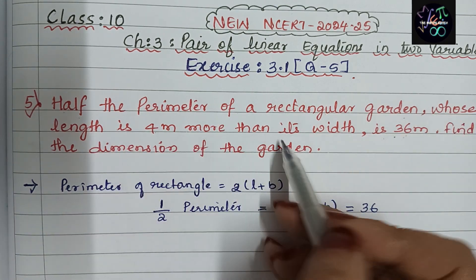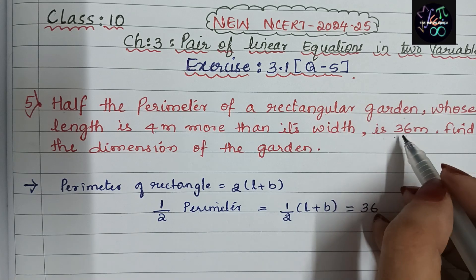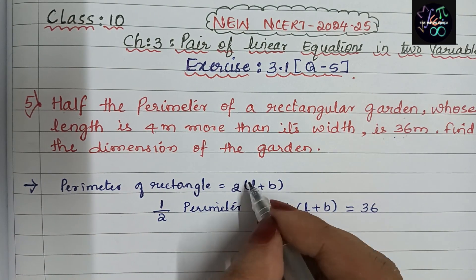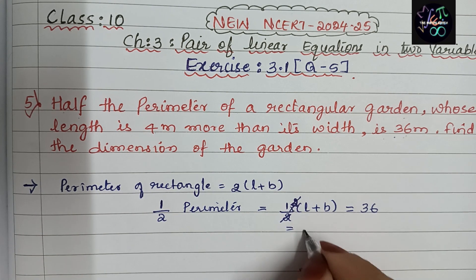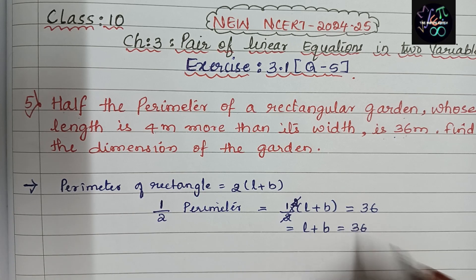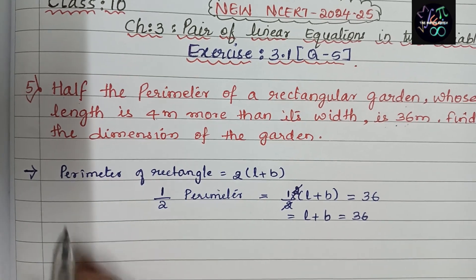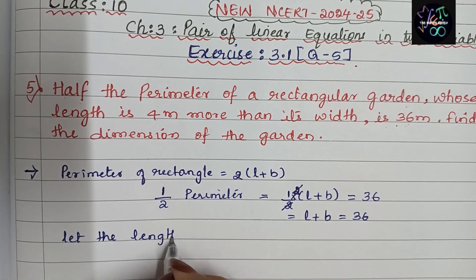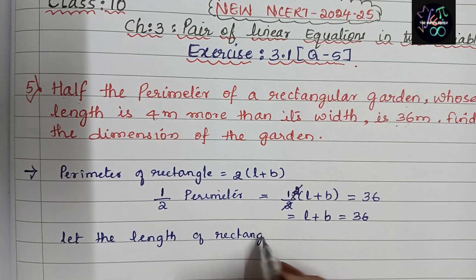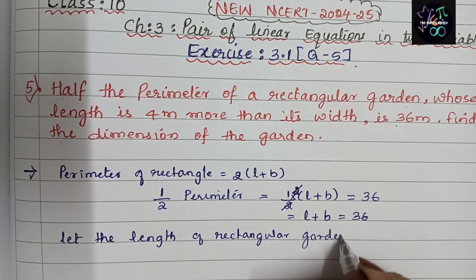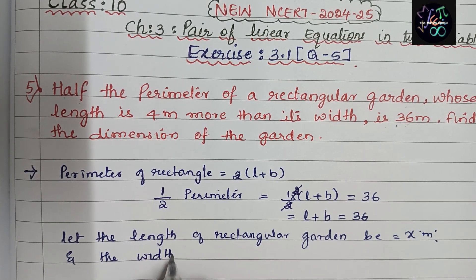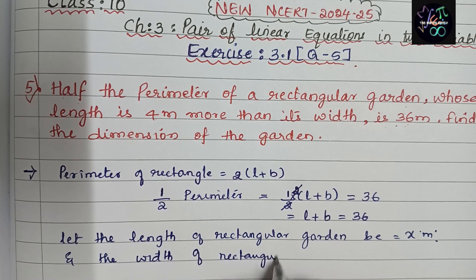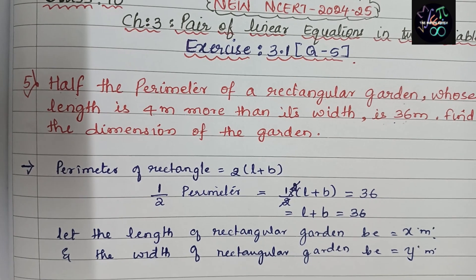As per the question, half perimeter is 36. The formula is half × 2(l + b), and the 2s cancel, so length plus breadth equals 36. Now let us assume: let the length of the rectangular garden be x meters, and the width of the rectangular garden be y meters.